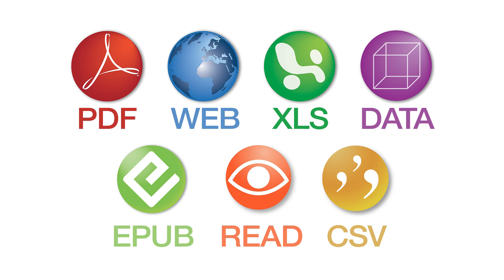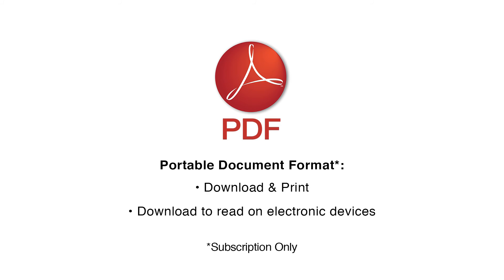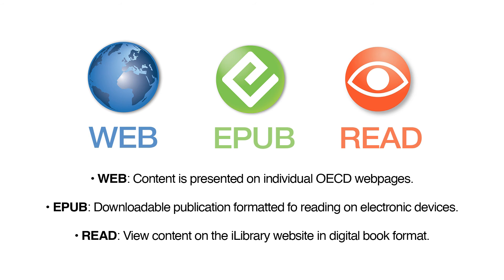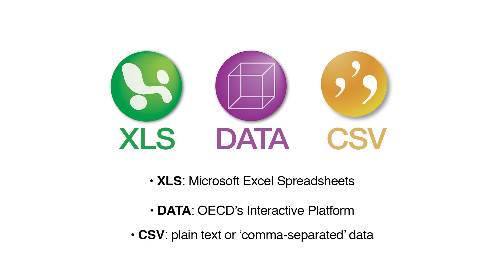Seven different formats are available for reading online, downloading, sharing, printing, and organizing content on different devices. PDF format is accessible with a subscription to iLibrary, allowing you to download and print content. Three formats are available for reading on electronic devices: Web allows for user-friendly viewing of content in HTML format on the site; EPUB is designed to be read on devices such as tablets or readers; and Read presents content online, similar to a PDF. The last three formats are for working with data: XLS allows for content to be downloaded in a Microsoft Excel spreadsheet; Data displays content in an interactive way through the OECD data portal; and CSV is for archive data, presented in plain text format.